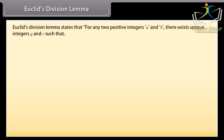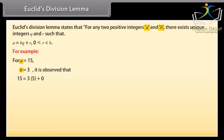Euclid's division lemma states that for any two positive integers A and B, there exists unique integers Q and R such that A equals BQ plus R, 0 is smaller than or equal to R which is smaller than B. For example, A equals 15, B equals 3. It is observed that 15 equals 3 into 5 plus 0, where Q equals 5 and R equals 0.